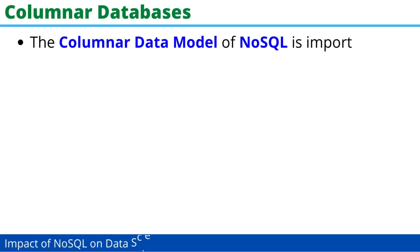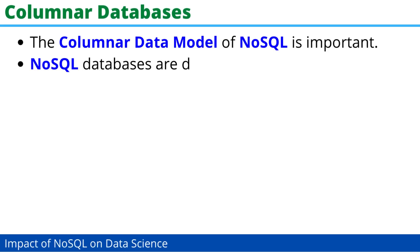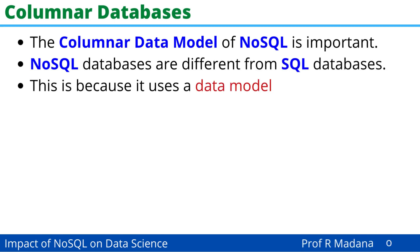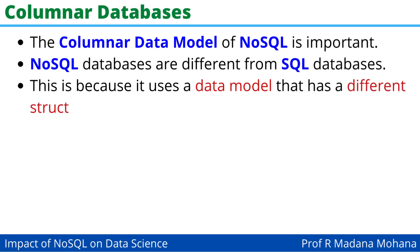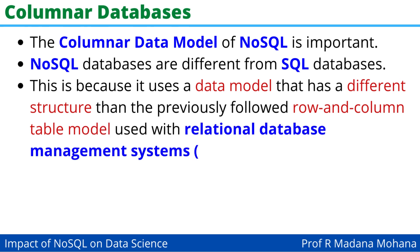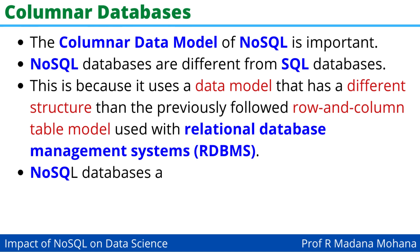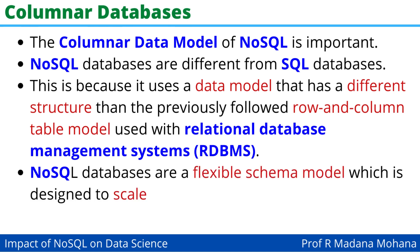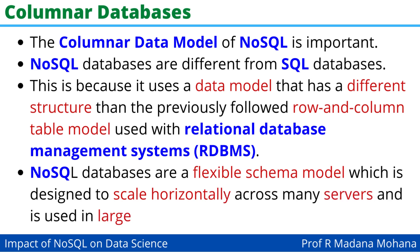The columnar data model of NoSQL is very important. NoSQL databases are different from SQL databases because they use a data model that has a different structure than the previously followed row and column table model used with relational database management systems. NoSQL databases have a flexible schema model which is designed to scale horizontally across many servers and is used in large volumes of data.